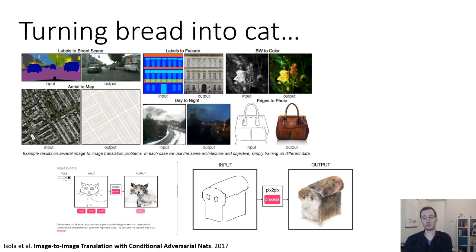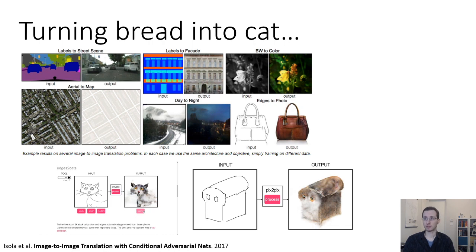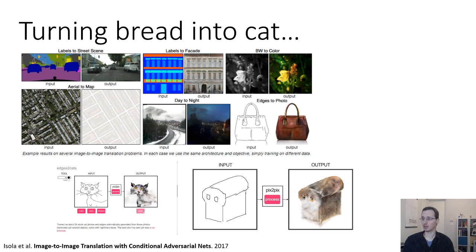You can also use GANs to do interesting conditional generation. We'll have a guest lecture from Philip Isola in a few weeks who will discuss this in more detail. This is from his paper called Image to Image Translation with Conditional Adversarial Networks, where GANs translate images from one domain to another — for example, an aerial photograph into a map, a black and white image into color, or a road photograph at night into the equivalent daytime scene. A particularly fun tool lets you translate between line drawings and photographs of cats, so you could draw a bread-shaped outline and get a bread-shaped cat.